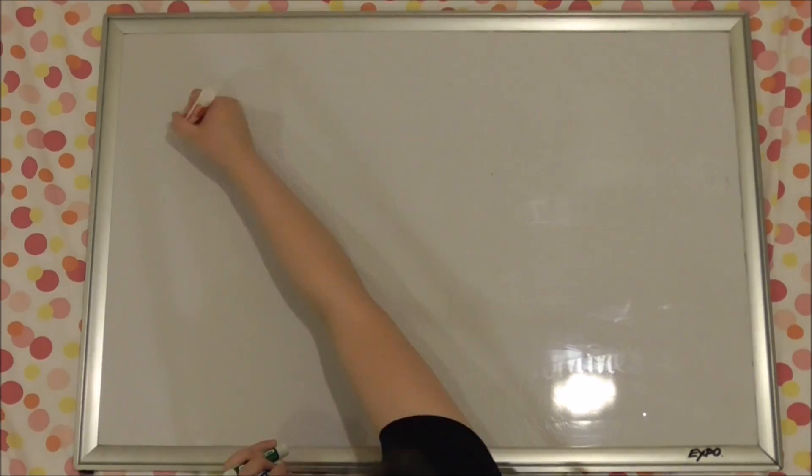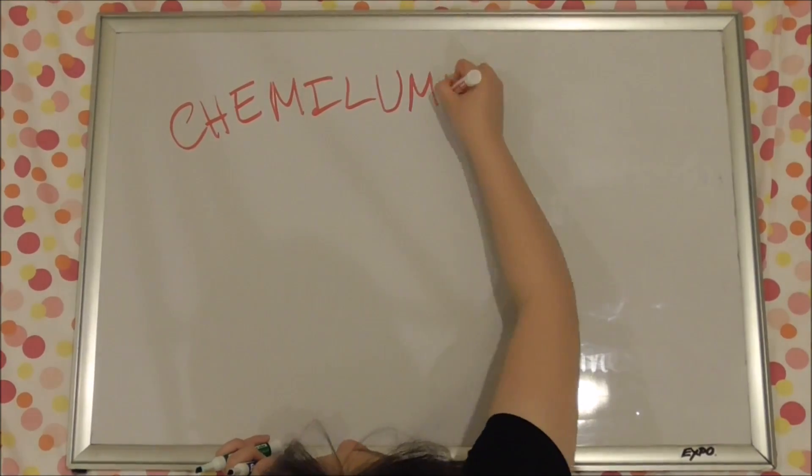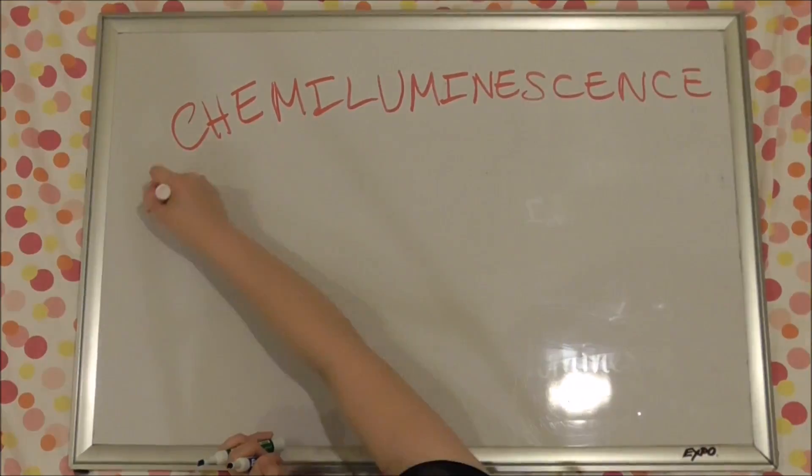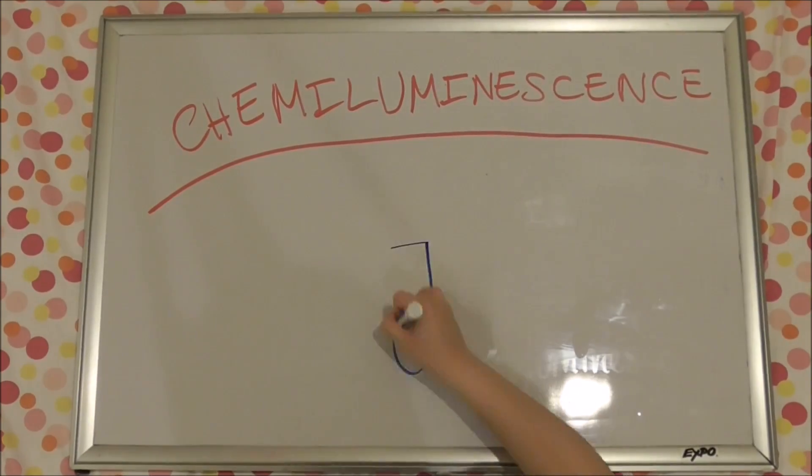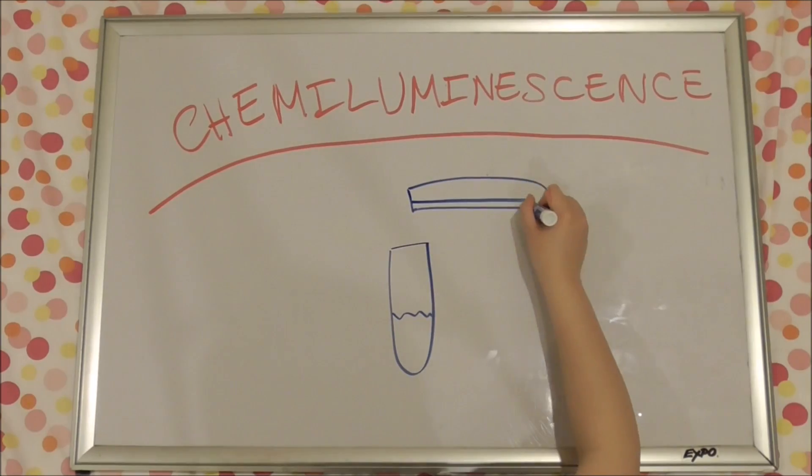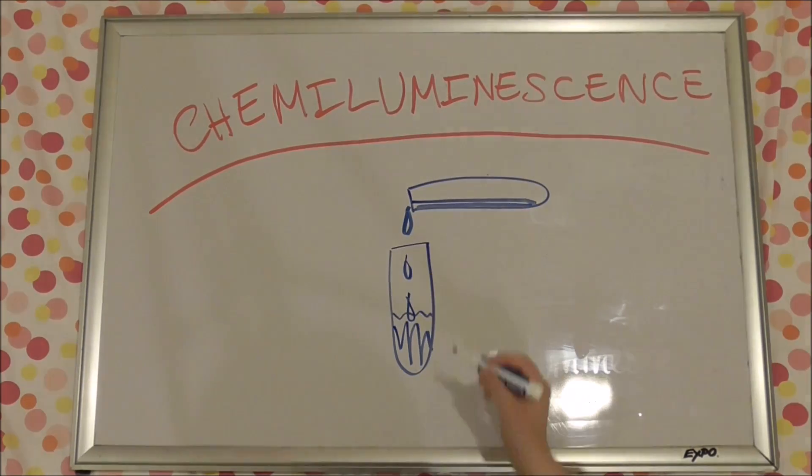So basically it all comes down to a basic question: what is chemiluminescence? Chemiluminescence is basically a reaction that produces light. So if you mix two chemicals for instance, you'll produce something that creates light.